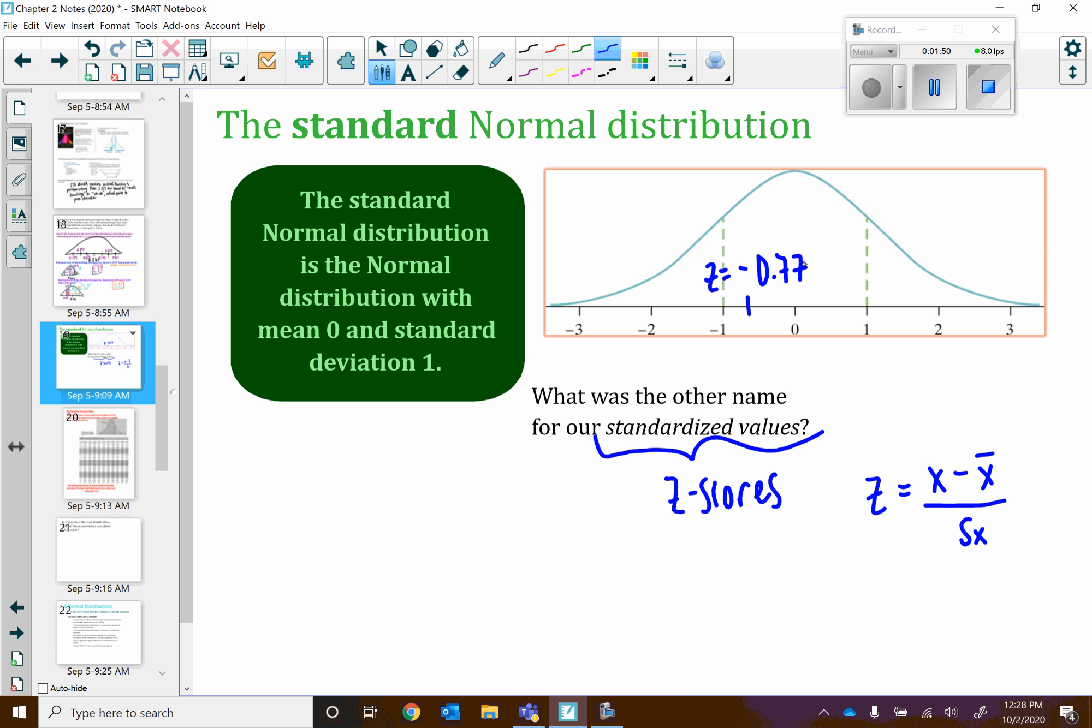Every z-score falls into this distribution. And why is that helpful? Well, we kind of know a little bit about our normal curve, right? We know about one standard deviation above and below the mean. That's 68. We know about two standard deviations above and below the mean. That's 95. And we know about three standard deviations above and below the mean. That's going to be the 99.7. But what if I'm not exactly one, two, or three standard deviations above or below the mean?